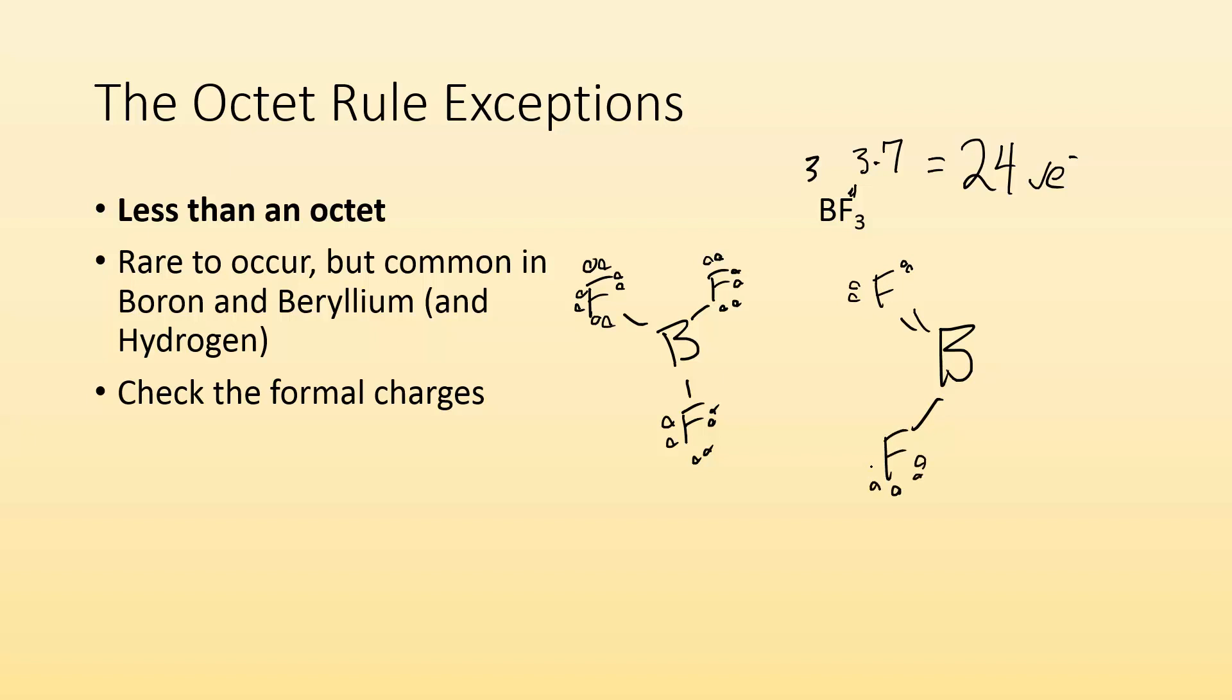But then when you check formal charges, it's not going to work out for a couple of reasons. One, when I have this set up, the formal charge on boron is going to be minus one, and on this fluorine, it's going to be plus one. Now, that doesn't really make sense because I know fluorine is the most electronegative element. Its electronegativity is 4.0. So if any one of those is going to end up with a negative charge because they're hogging electrons, it's going to be the fluorine. So this structure doesn't really make sense based on the formal charges. So this is what we're going to get, even though this boron only has six valence electrons and it doesn't have an octet. It's OK. It's an exception.